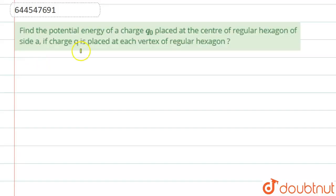Well hello students, now we are going to see this question. The question says find the potential energy of a charge Q0 placed at the center of a regular hexagon of side A, if the charge Q is placed in each vertex of a regular hexagon.